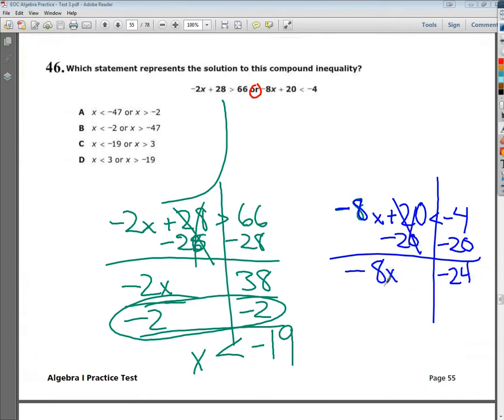Now, in this case, I need to divide both sides by negative 8. Once again, I want to circle it. This becomes 3. Instead of being less than, I'm actually going to do a greater than.